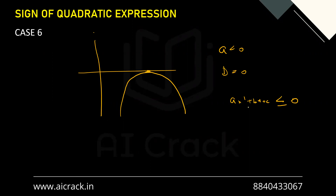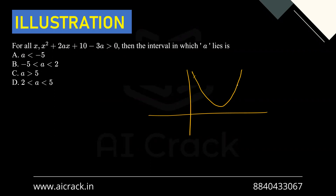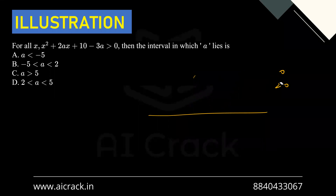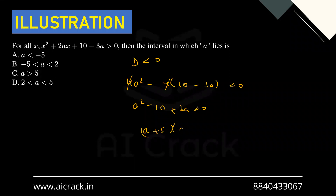Example: for all x, x² + 2ax + (10 - 3a) > 0. Find the interval in which a lies. Since this must be always greater than zero, we need a > 0 and D < 0. The coefficient of x² is 1, which is already positive. So we only apply D < 0: 4a² - 4(10 - 3a) < 0, which gives a² + 3a - 10 < 0, factoring to (a+5)(a-2) < 0. Therefore a ∈ (-5, 2). Option B is correct.